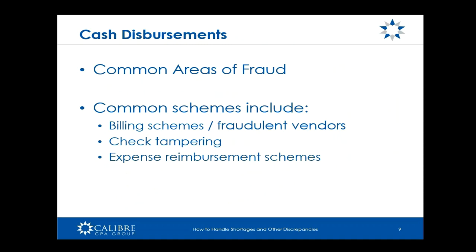Now let's talk about the controls. We're going to focus on the cash disbursement side in this webinar — that is far and away the most common area for fraud and the easiest place to commit fraud. Some common schemes include billing schemes with fraudulent vendors, where someone creates a vendor in the system. With technology today, it's very easy to create an official-looking invoice, send it into the organization, and get paid. Check tampering occurs when checks are manipulated after signing. Expense reimbursement schemes are probably the most common — someone incurs personal expenses on a corporate card or expense report and gets reimbursed.